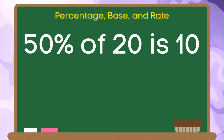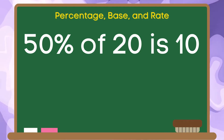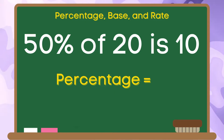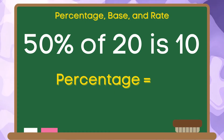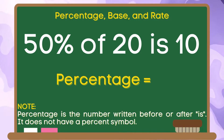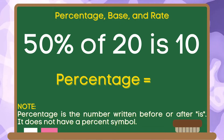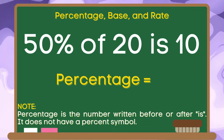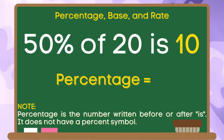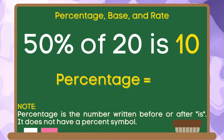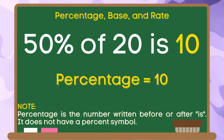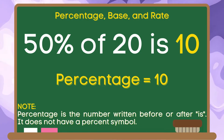Let us have another example: 50% of 20 is 10. Let us look for the percentage. Remember, percentage is the number written before or after the word 'is' and it does not have a percent symbol. As we can see, 10 is written after the word 'is.' Therefore, the percentage in this given example is 10.